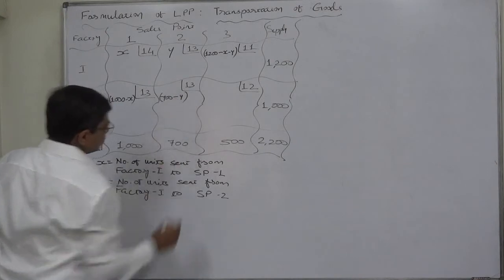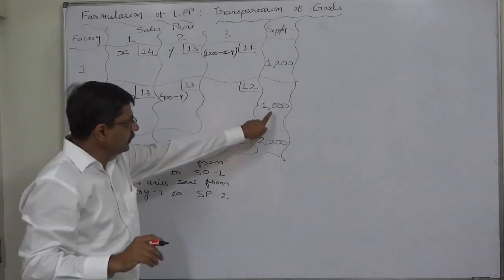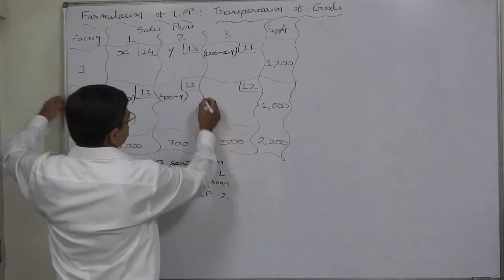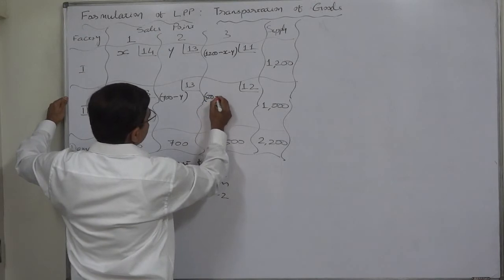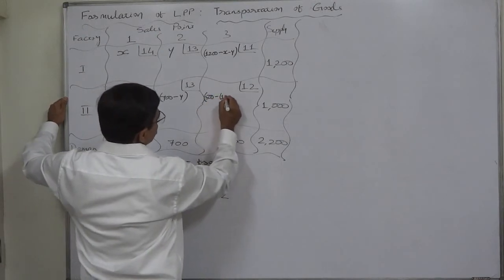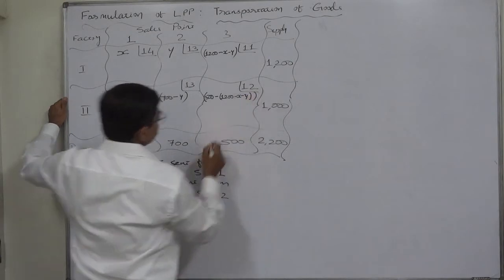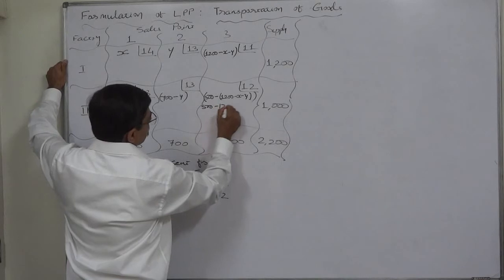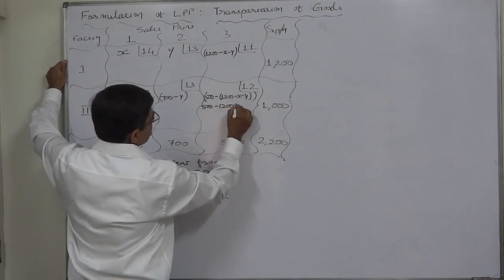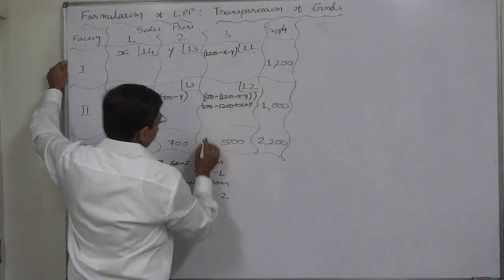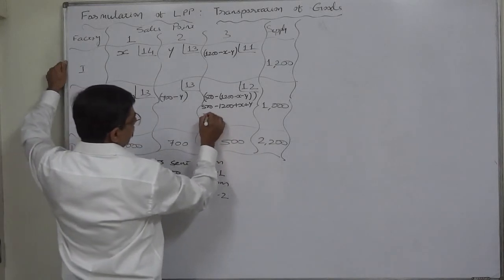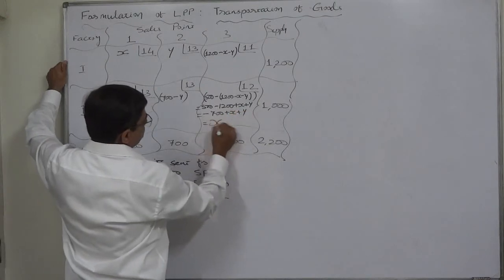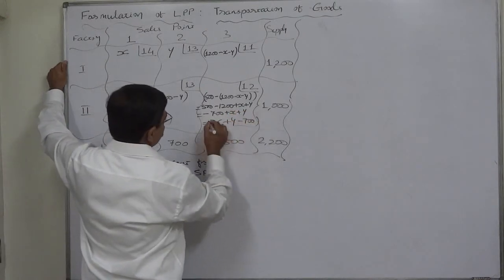For the last cell — factory 2 to sales point 3 — we can derive the quantity as: 500 minus (1200 minus x minus y), which simplifies to x plus y minus 700 units from factory 2 to sales point 3.